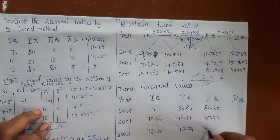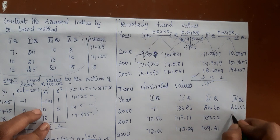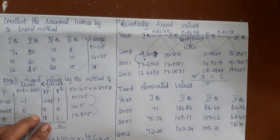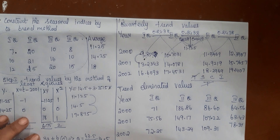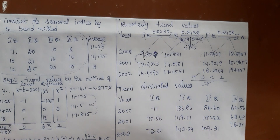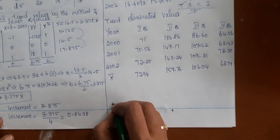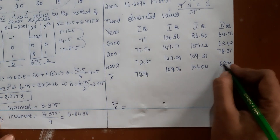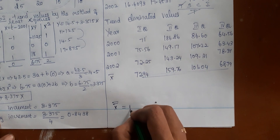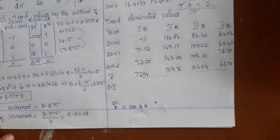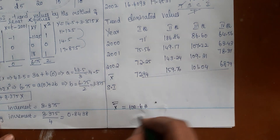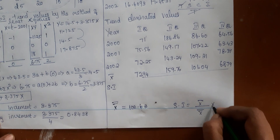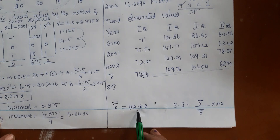Calculate the average for each quarter — add all the trend-eliminated values for that quarter and divide by 3. Then compute the average of averages: add all quarterly averages and divide by 4 to get 100.63. To compute the seasonal index, divide each quarterly average by the overall average and multiply by 100. The formula is x-bar divided by x-bar-bar, times 100. For example, 72.94 divided by 100.63, times 100.